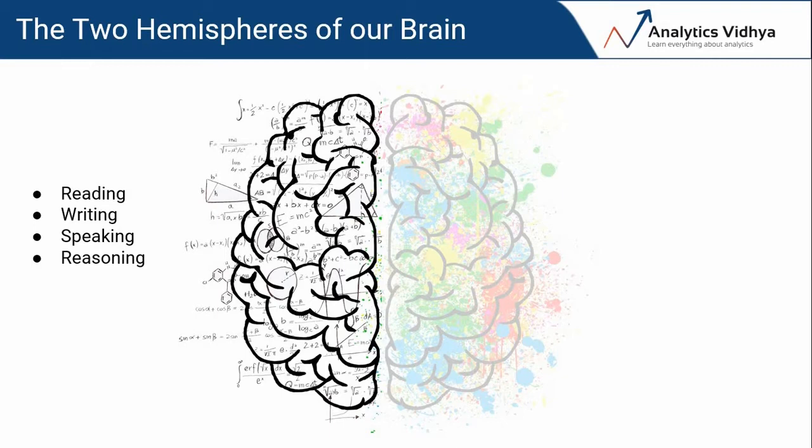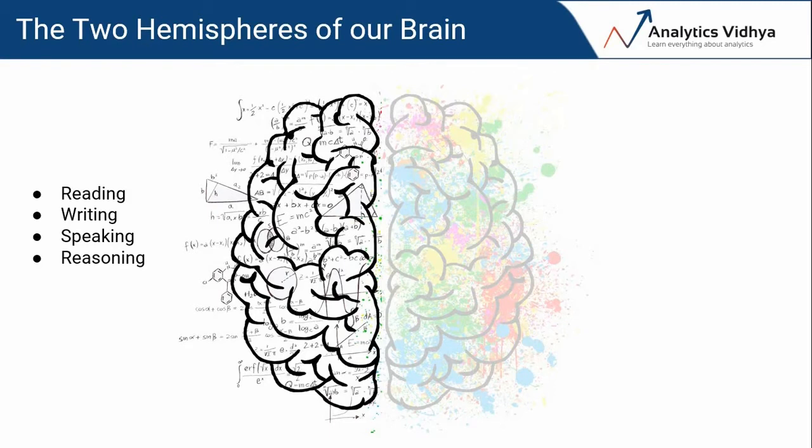The left hemisphere of our brain is responsible for tasks like reading, writing, speaking, logical reasoning, and understanding. This hemisphere processes information sequentially, one at a time. The right hemisphere, on the other hand, handles visual perception — all the patterns we see around us intuitively without realizing it, such as the shape of the chair you're sitting in, the color of the walls around you right now.